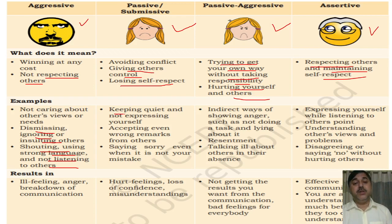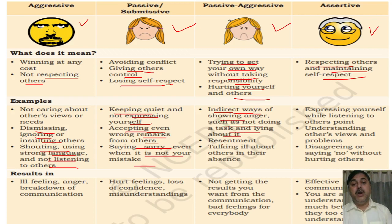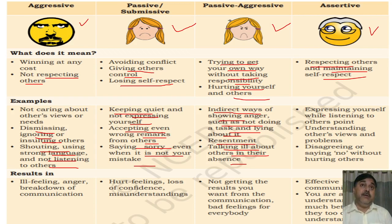Passive and submissive: the person, by himself, expects wrong remarks from others and says sorry even when they haven't done any mistake. Passive-aggressive: showing anger indirectly, such as not doing the task, laying about it, resentment, and talking about others in their absence — saying bad things, giving a bad setup, creating bad language and bad impact for other persons.